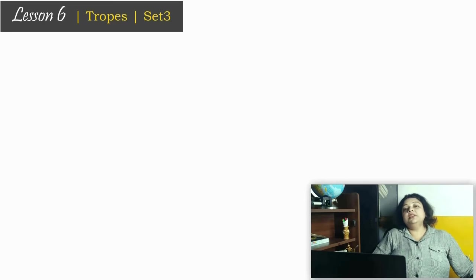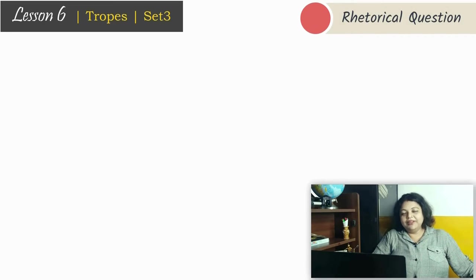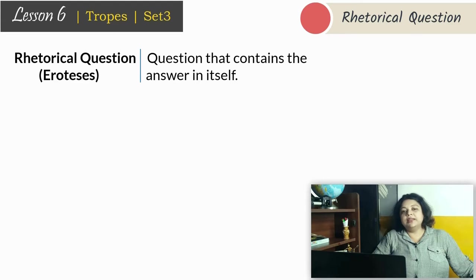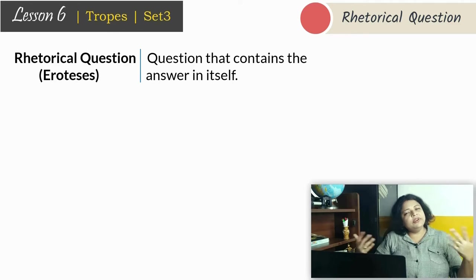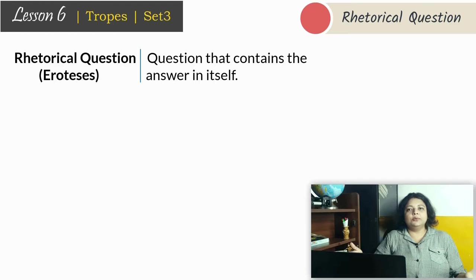The last figure of speech of today's class is a very easy one compared to the ones we have covered, and that is rhetorical interrogation. Very easy to identify — look for a question mark. If there is a question mark, there is a high chance it is a rhetorical interrogation. But how to understand whether it is a rhetorical interrogation or just a question? If the question contains the answer, if the poet is asking a question not wanting any answer but already knowing the answer, then it is rhetorical interrogation. But if somebody is actually asking a genuine question, then it is not rhetorical interrogation.